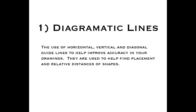Of the three tools—diagrammatic lines, the unit, and negative shape—the first one is diagrammatic lines. An example of that would be the grid. Diagrammatic lines are a series of vertical and horizontal lines, but also diagonal lines, and they are used to enable us to have more accurate drawings.